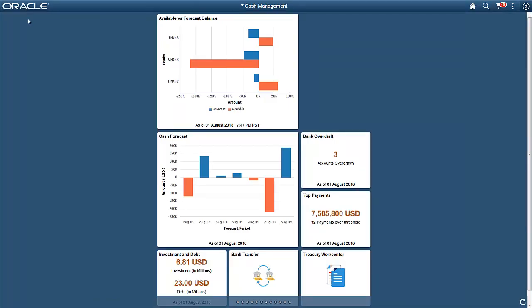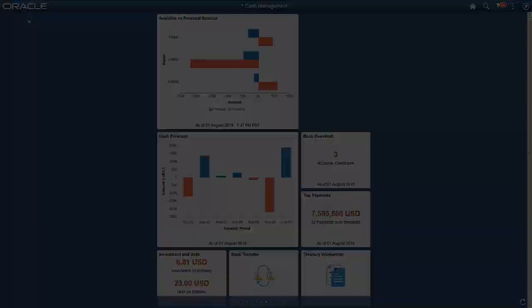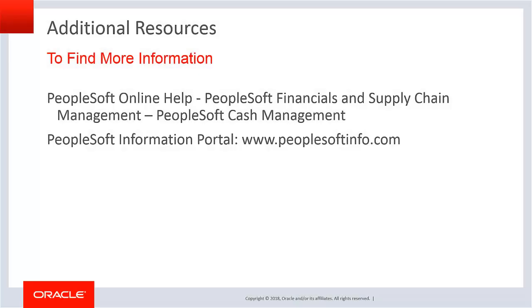In summary, you can configure the cash forecast dimensions and forecast rules to meet your business needs and to support drill down to details. This provides more information about cash forecast results and can be used to plug in multiple sources that affect cash forecast results. For further details on cash forecasting enhancements, refer to the PeopleSoft FSCM Online Help and the PeopleSoft Information Portal. Additional information for the features described in this video can be found in the PeopleSoft Cash Management Online documentation.